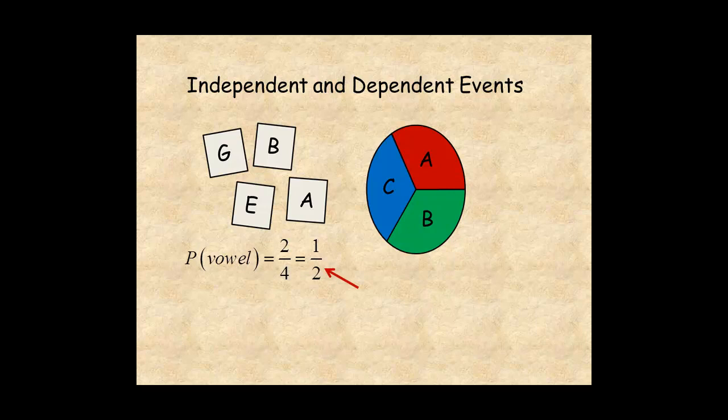The probability of a vowel from the spinner is one out of three. So the probability of two vowels is one-half times one-third, or one chance out of six.